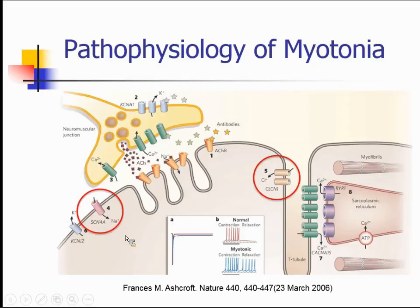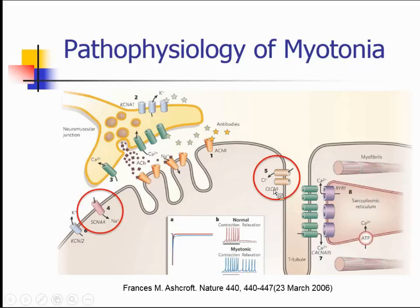That depolarizes the muscle membrane and the muscle contracts. In order to repolarize the membrane, potassium is forced out of the intracellular compartment of the muscle. That potassium finds its way into the T-tubular system, which is a barrier between the intracellular and extracellular muscle membrane. Because those positively charged potassium ions accumulate in the T-tubular system, that's offset to prevent additional depolarization of the muscle membrane by chloride making its way intracellularly.